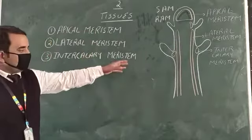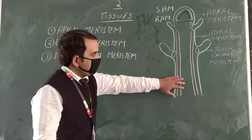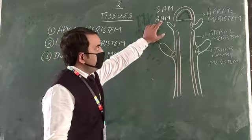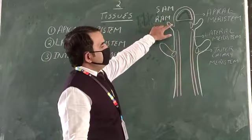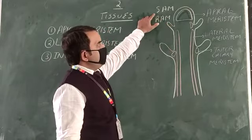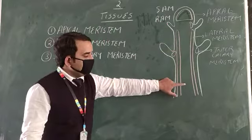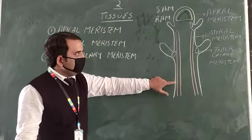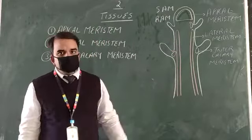Next we move on to the lateral meristem. The apical meristem is present on the shoot tip and root tip. Now we move on to the lateral side of the stem, that is the lateral meristem.